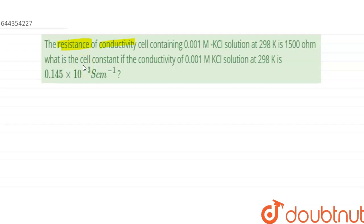Hello everyone, the question is: the resistance of conductivity cell containing 0.01 molar KCl solution at 298 Kelvin is 1500 ohm. What is the cell constant if the conductivity of 0.001 molar KCl solution at 298 Kelvin is 0.145 into 10 to the power minus 3 Siemens centimeter inverse?